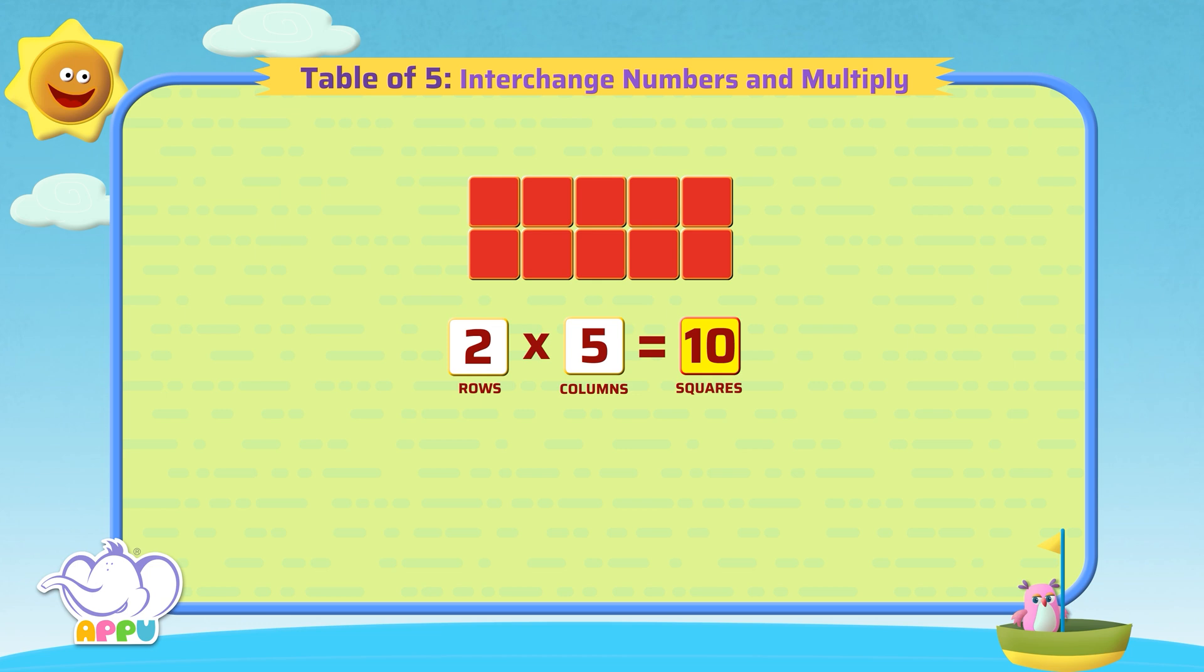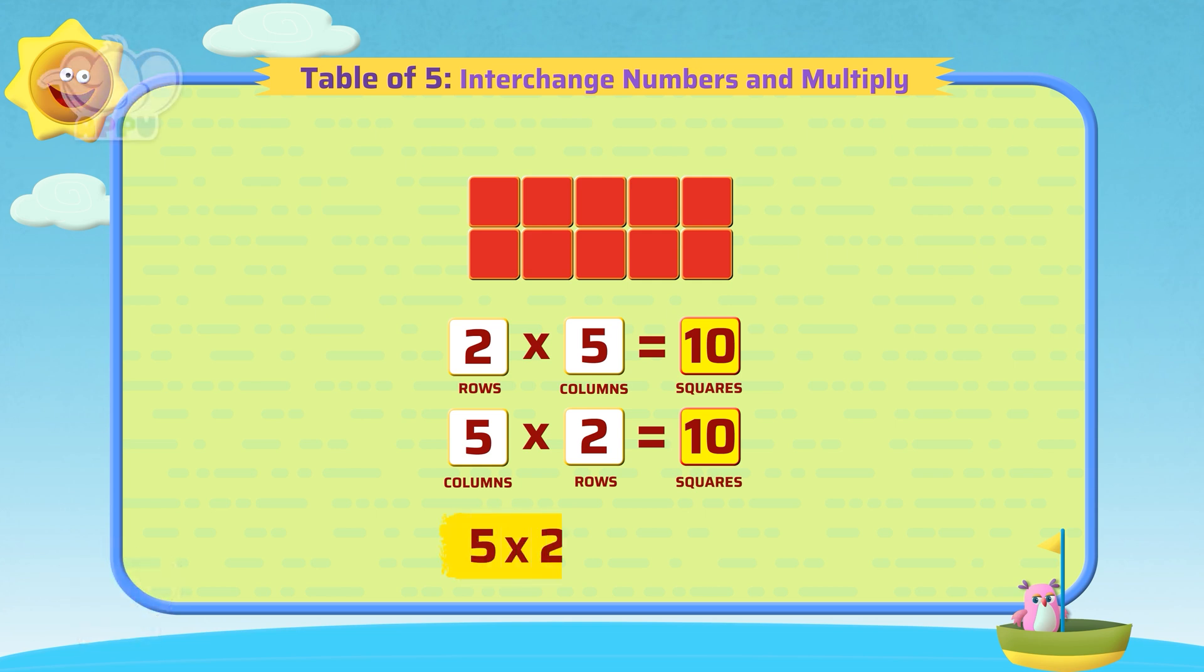We can also write the above as 5 columns times 2 rows equals 10 squares. Hence 5 times 2 equals 2 times 5.